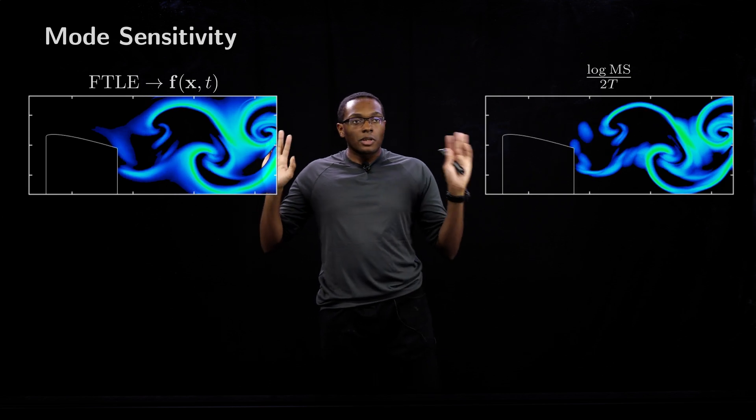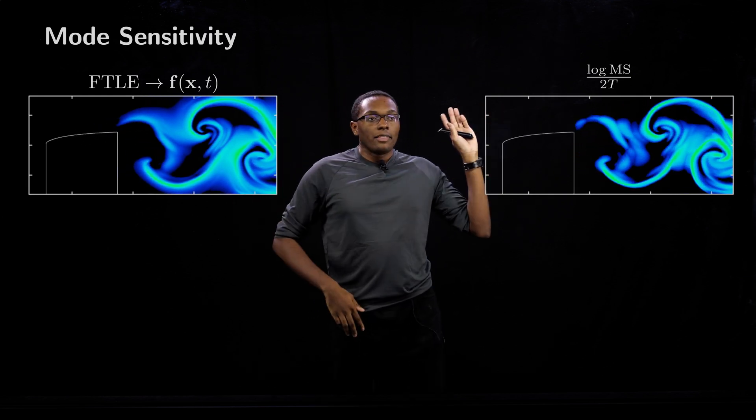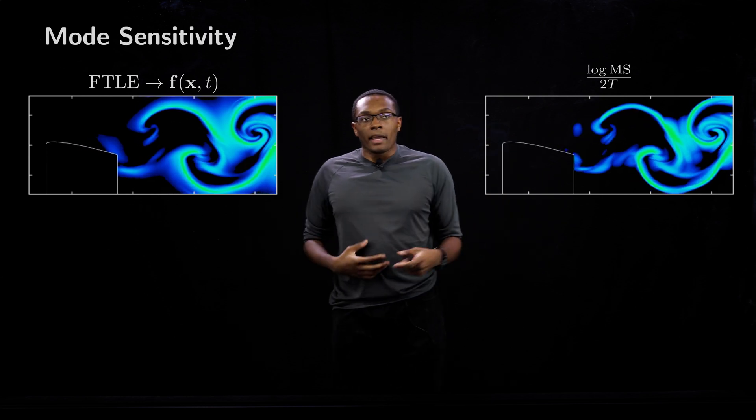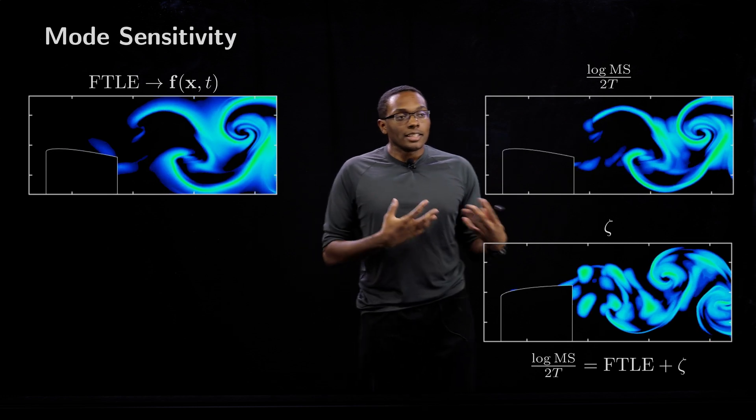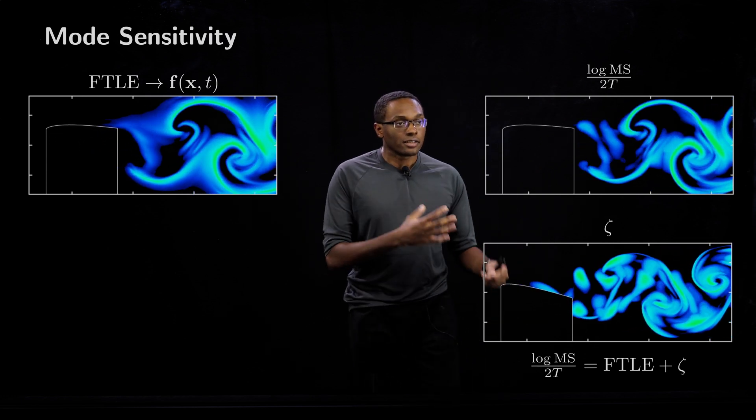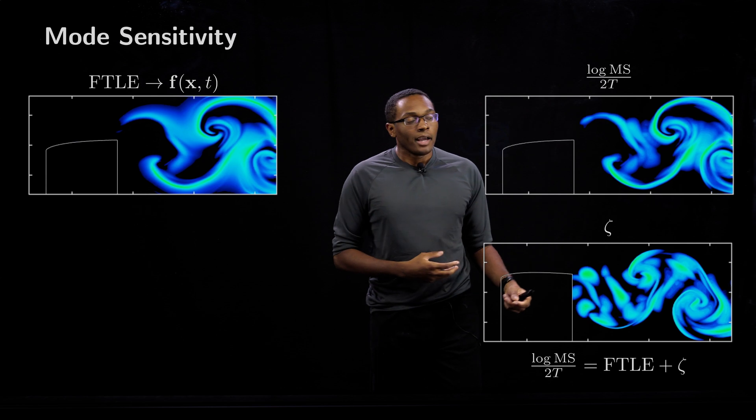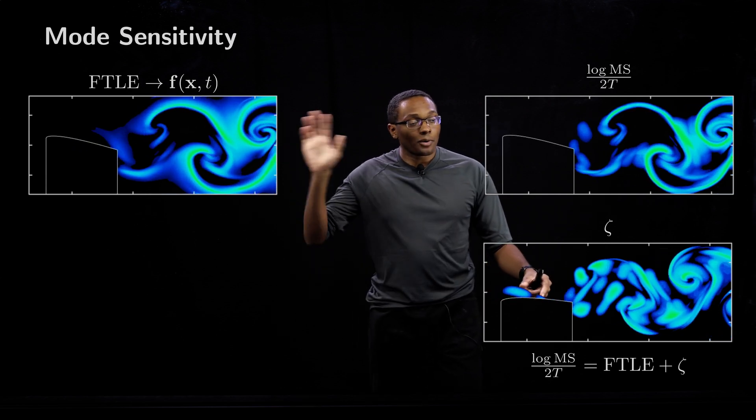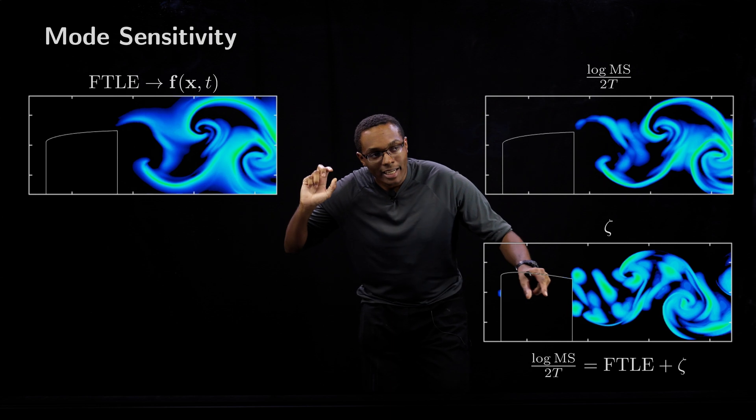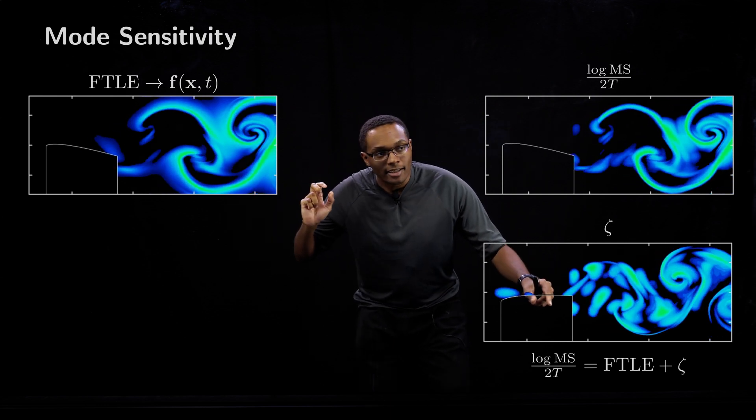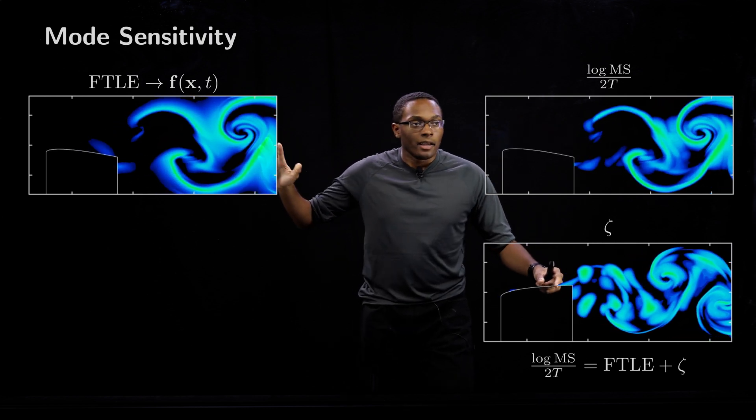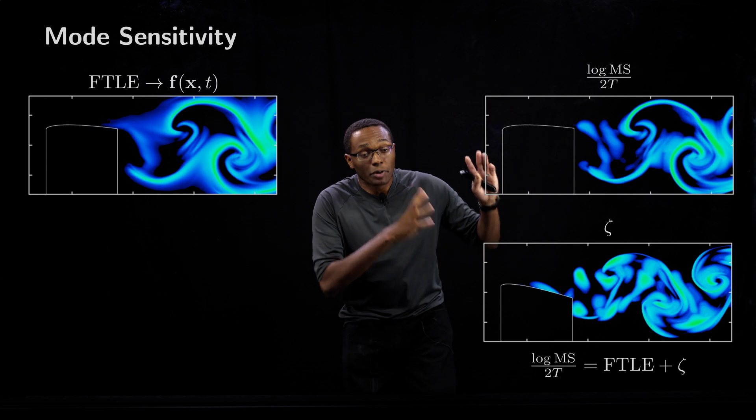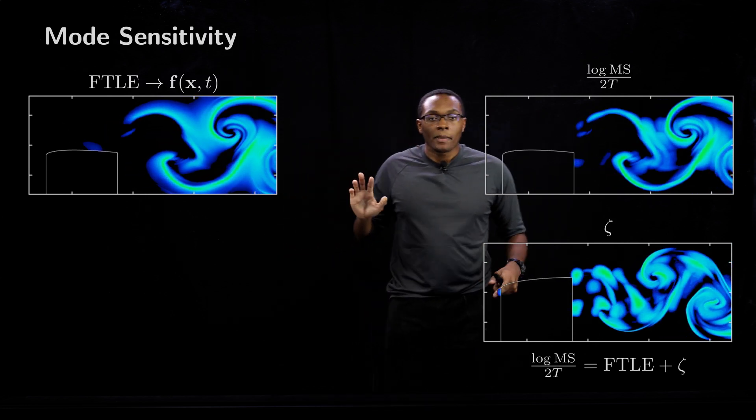If we look at this particular mode and the mode sensitivity field, we can see some strong similarities between the FTLE field and the MS field. The dynamics are similar, but if we look at the difference between the two, we can see something different, some really unique coherent patterns forming. What's most interesting that we didn't see in either one of these fields is the leading edge vortex that comes here and develops into this baseline FTLE structure. The zeta is a perturbation to the FTLE field.